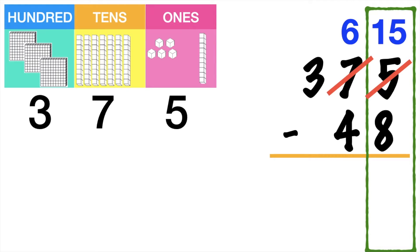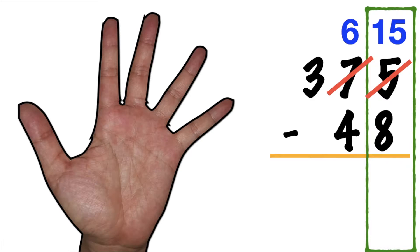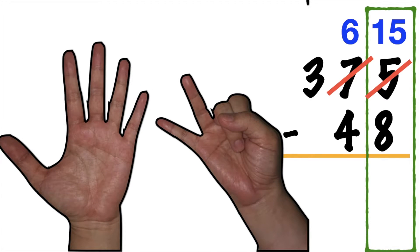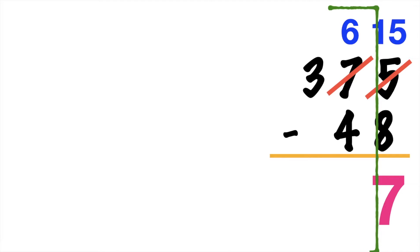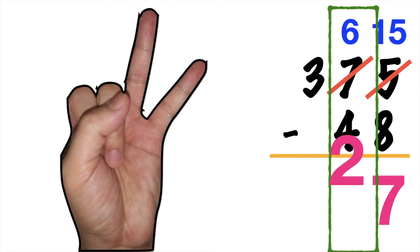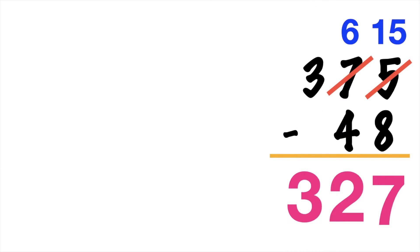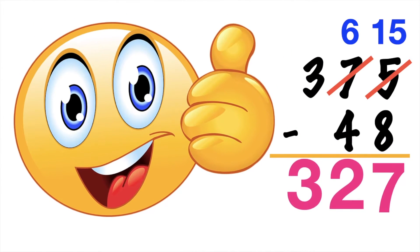So we can now subtract 15 and 8. 15 minus 8 — 8 on your mind, let's count forward: 8, 9, 10, 11, 12, 13, 14, 15. So 15 minus 8 is equal to 7. Then let's proceed to the tens place. 6 minus 4 — 4 on your mind, count forward: 4, 5, 6. So 6 minus 4 is equal to 2. Bring down 3 since there is no more number to be subtracted. So the difference is 327.